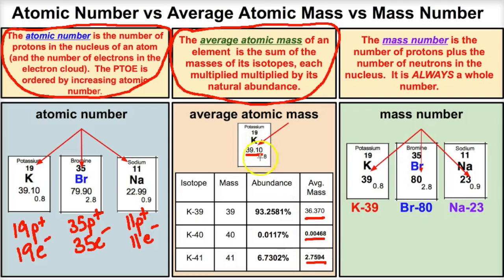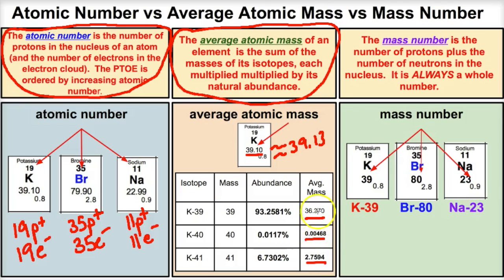Then we add those three values together and we end up with approximately 39.10. That's how we calculate the average atomic mass — take all naturally occurring isotopes, multiply their masses by their relative abundance, then add them up. That's what you're seeing on the periodic table: the average atomic mass.